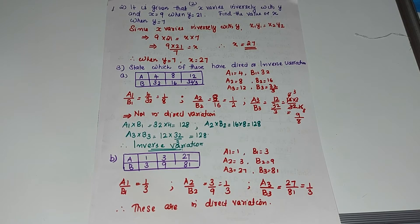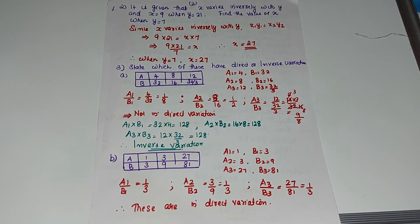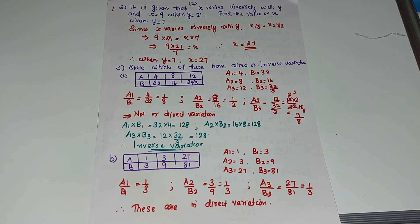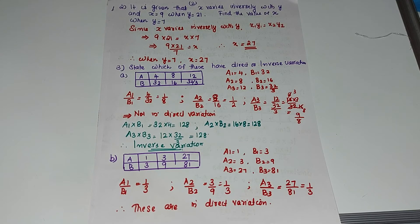Question 3(b): The table gives a: 1, 3, 27 and b: 3, 9, 81. Checking for direct variation: a1/b1 = 1/3; a2/b2 = 3/9 = 1/3; a3/b3 = 27/81 = 1/3. All ratios are equal and constant, so they are in direct variation.